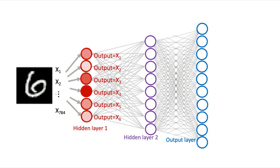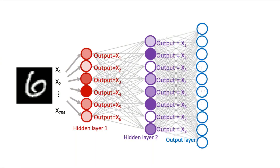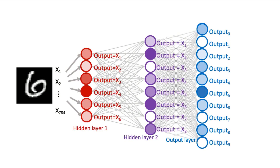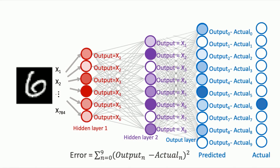We see what our network outputs. Because the weights and biases are random right now, our network is not going to output anything sensible, but we need to keep track of the error. The network outputs 10 dimensional outputs, because it has 10 output neurons, and each output neuron is representing the detection of one of the digits 0 to 9. So the error for our network's response to an image of a 6 is the sum of the errors of all our output neurons.